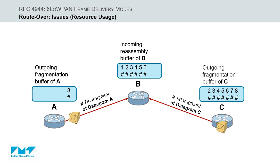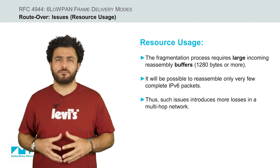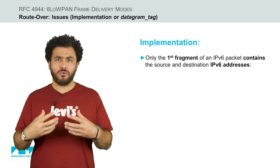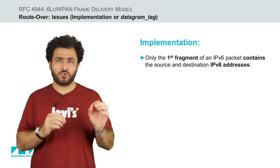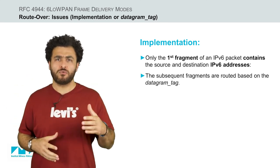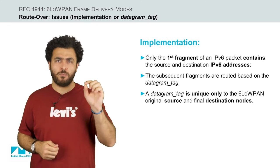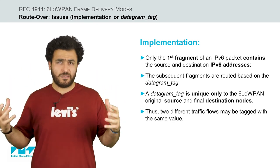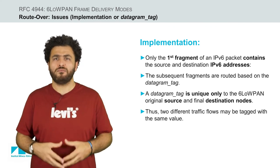Therefore, given several consecutive datagrams in the wireless multi-hop network, an ongoing reassembly of datagram A may be discarded when a new fragment of datagram C is received, while datagram A has not yet entirely been reassembled. Thus, such issues will introduce more losses in the multi-hop network. Finally, from the implementation point of view, according to RFC 4944, only the first fragment of the IPv6 data packet contains the source and destination IPv6 addresses, while the following fragments are routed based on the datagram tag. This datagram tag is misleading since a tag is unique only to the 6LoWPAN original source and the final destination nodes. As a result, two different traffic flows may be tagged with the same value, which could introduce implementation issues during the storing of the fragment forwarding state.